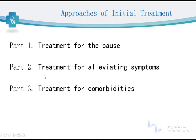Part two: treatment for symptoms. For example, COPD patients usually have cough, sputum, and dyspnea, so we need to provide therapy for these symptoms. Part three: treatment for comorbidities. For example, if a patient has AECOPD with pneumonia, you also need to treat the pneumonia.